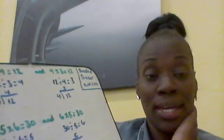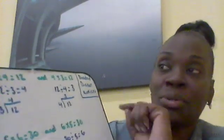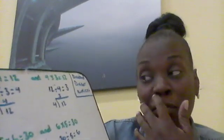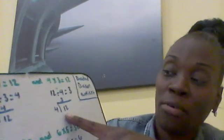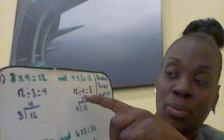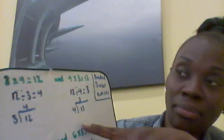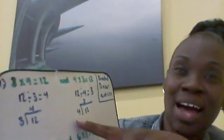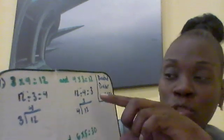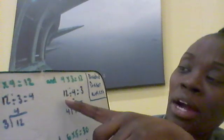12 divided by 3 equals 4. Now let's look at the other part: 12 divided by 4 equals 3. So our dividend, 12, is inside the bracket. Our divisor is in front of the bracket, and our quotient is on top of the bracket.